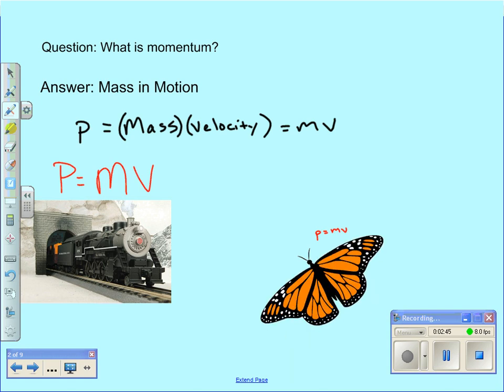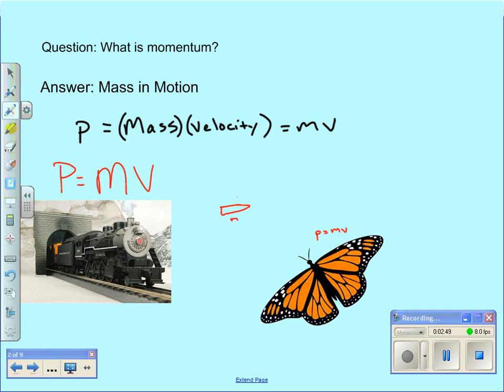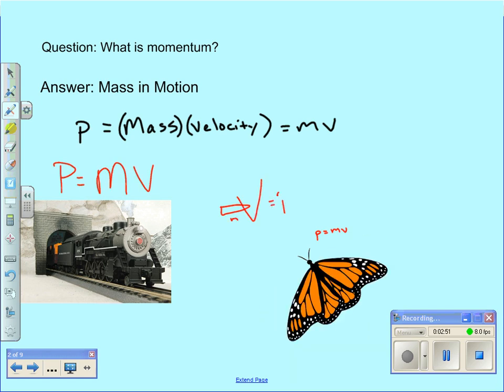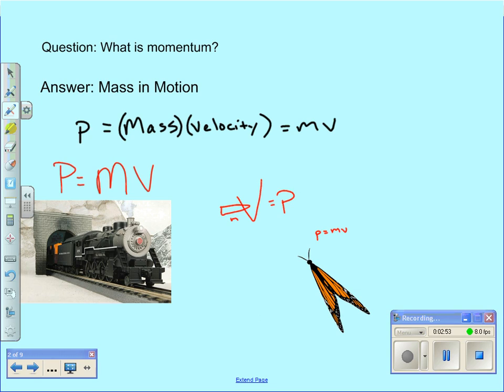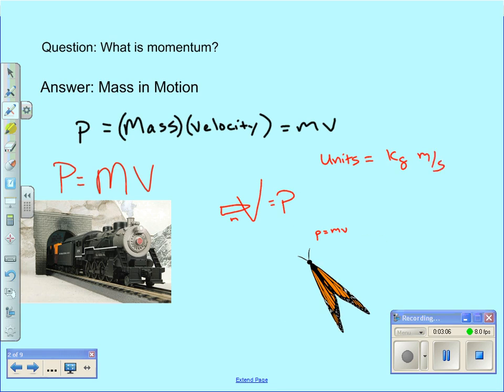So those are the extremes. You can imagine something in between, maybe a bullet fired out of a gun. It's got a little mass, but it's got a really big velocity. So it could have a substantial momentum. The point is, it's really simple. Momentum is just mass times velocity. The units, though, are a little bit cumbersome to say. The units are just the units of the variables. So, kilogram meter per second.